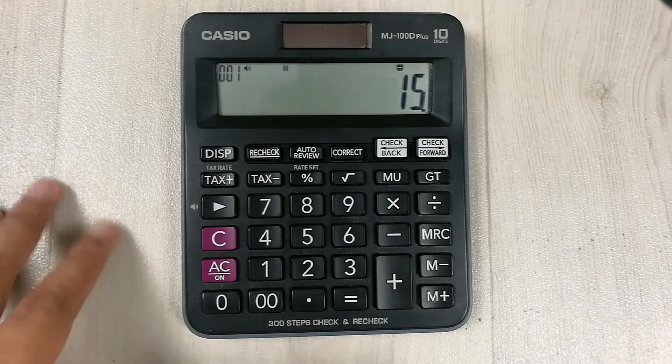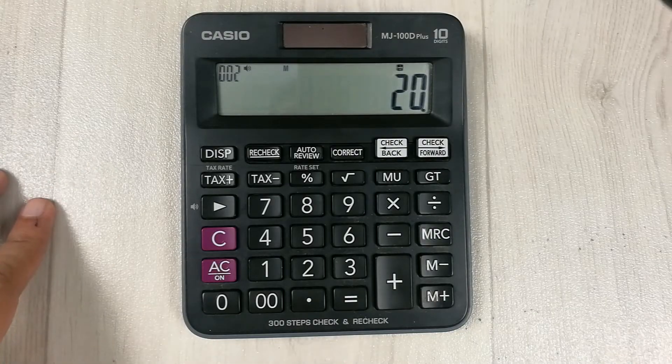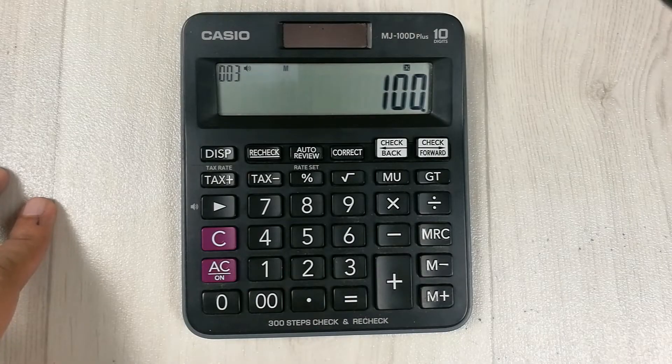So 15 divided by 20, and then we multiply it with 100. So multiply button and then 100.